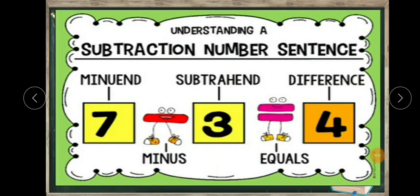Now let's look at the subtraction number sentence. How do we read this sentence? Seven minus three equals four. All numbers in this statement have names. The number in the place of seven is called the minuend. The number in the place of three is called the subtrahend. And the answer is called the difference. So: minuend minus subtrahend equals difference.